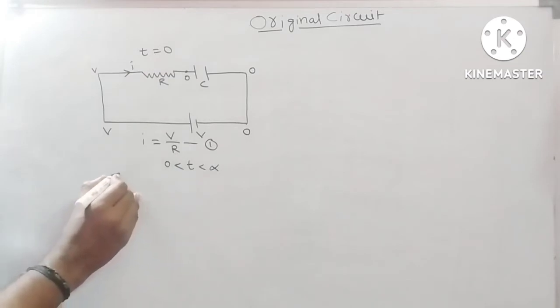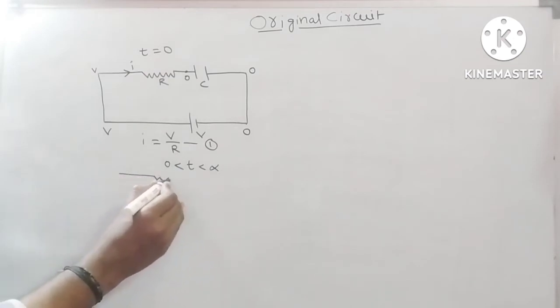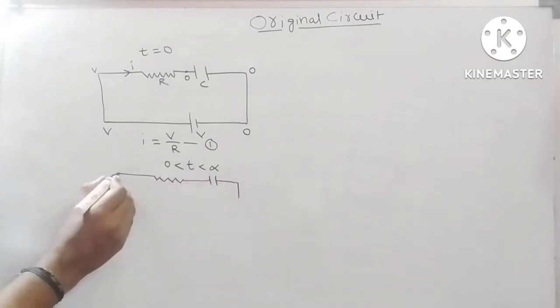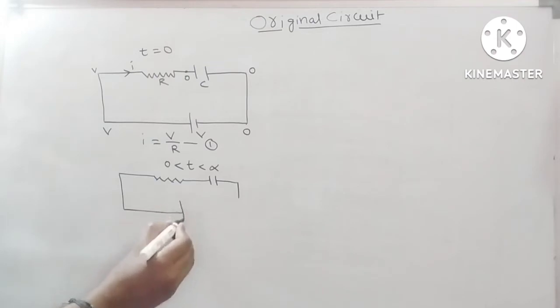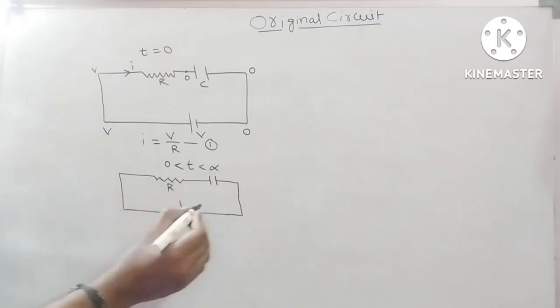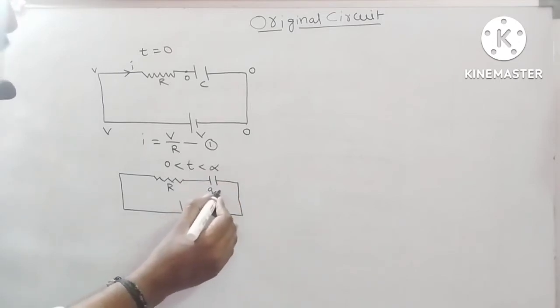I will draw one more circuit like this. This is the resistance, capacitor, battery of EMF or voltage V. So, resistance R, here charge after some time, some charge is stored in capacitor.